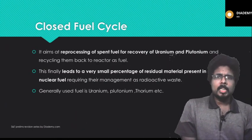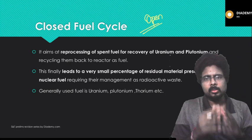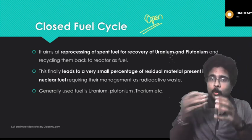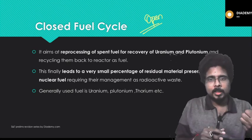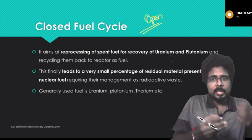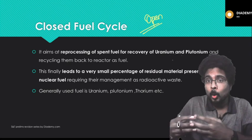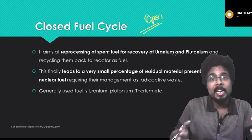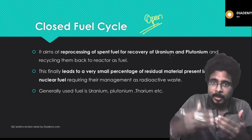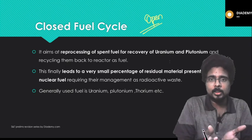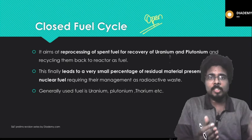Closed fuel cycle — there are two types: closed fuel cycle and open fuel cycle. In a closed fuel cycle, the output residue is very less. When fuel is burned we get a residue — like smoke and dust particles when petrol is burned in a bike, or ash when wood is burned.